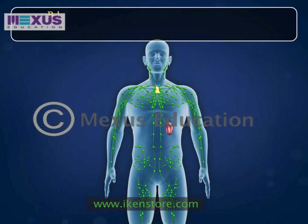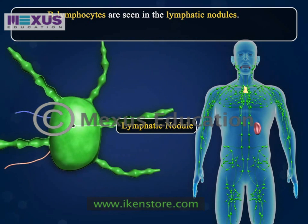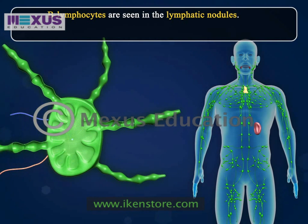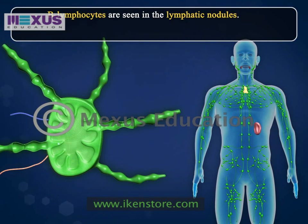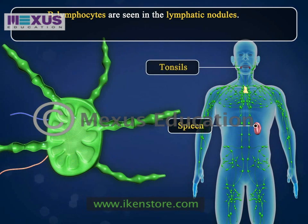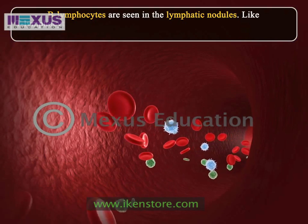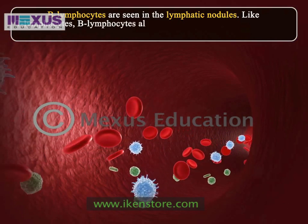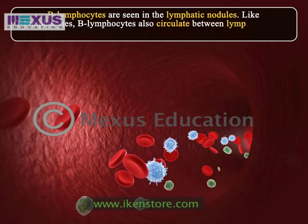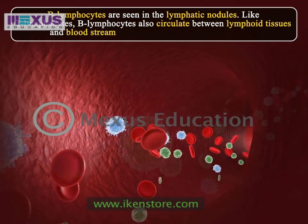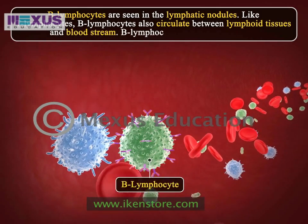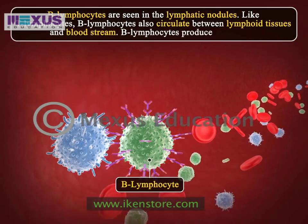B lymphocytes are seen in the lymphatic nodules. Lymphatic nodules are dense spherical bodies of lymphoid tissue found in lymphoid organs including the tonsils, spleen, and lymph nodes. Like T lymphocytes, B lymphocytes also circulate between lymphoid tissues and the bloodstream. B lymphocytes produce antibodies.